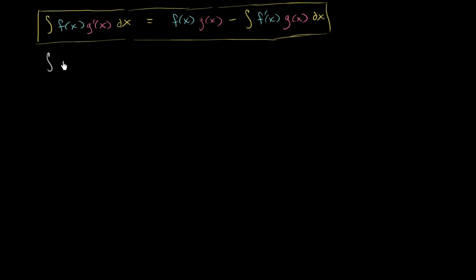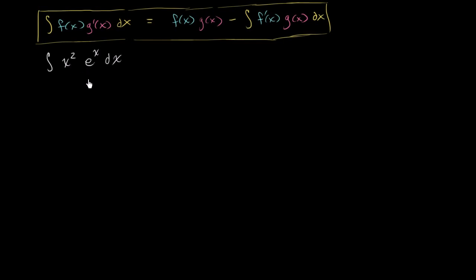Let's see if we can take the antiderivative of x squared times e to the x dx. The key is to recognize when you can attempt to use integration by parts. The clue that integration by parts may be applicable is when you have a function that's the product of two other functions — in this case x squared and e to the x — where taking the derivative of one makes it simpler, and taking the antiderivative of the other makes it no more complicated.